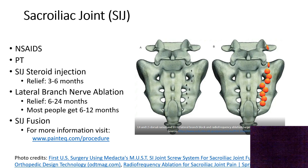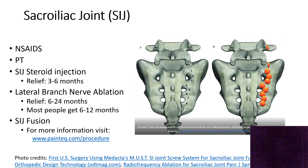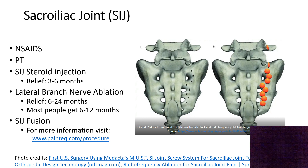The lateral branch nerve ablation for SI joints is very similar to the lumbar spine process: first do a lateral branch block, and if you get good relief, repeat it. If you get good relief again, you can burn the nerves as they exit the foramen — giving you a numb SI joint. Relief can last between six and 24 months, most people getting six to 12 months. The only caveat is that several insurance companies do not cover SI joint lateral branch ablations.